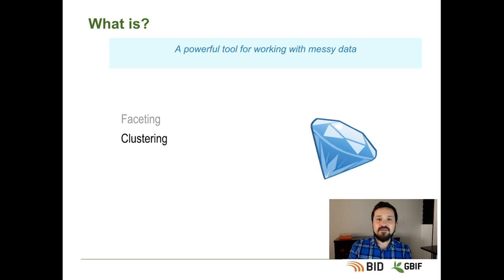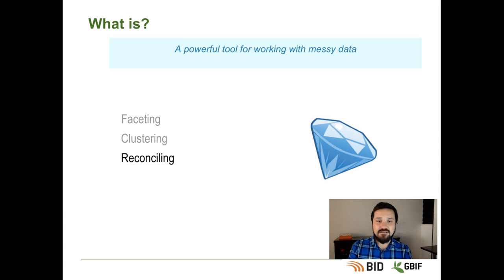Clustering, which is the process of finding in a list of values the same items with slightly different spelling. And Reconciling — it allows you to link your datasets to others through reconciliation of single terms and with named entity recognition using URLs.